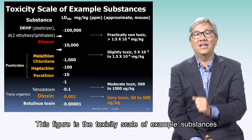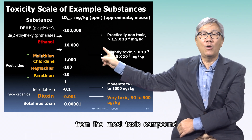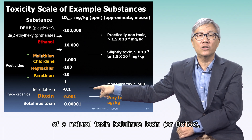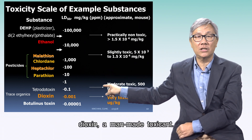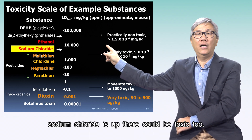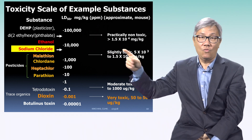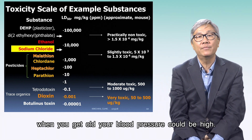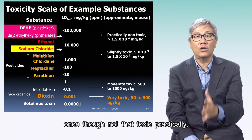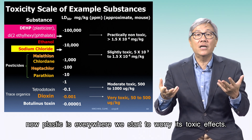This figure shows the toxicity scale with example substances, from the most toxic — natural toxin botulinus toxin or botox — to dioxin, a man-made toxicant, to pesticides, ethanol, and sodium chloride. Even salt could be toxic: if we consume more salt, when we get older, blood pressure could be high. How about plasticizers like DEHP? Once not that toxic practically, now plastic is everywhere and we start to worry about its toxic effects.